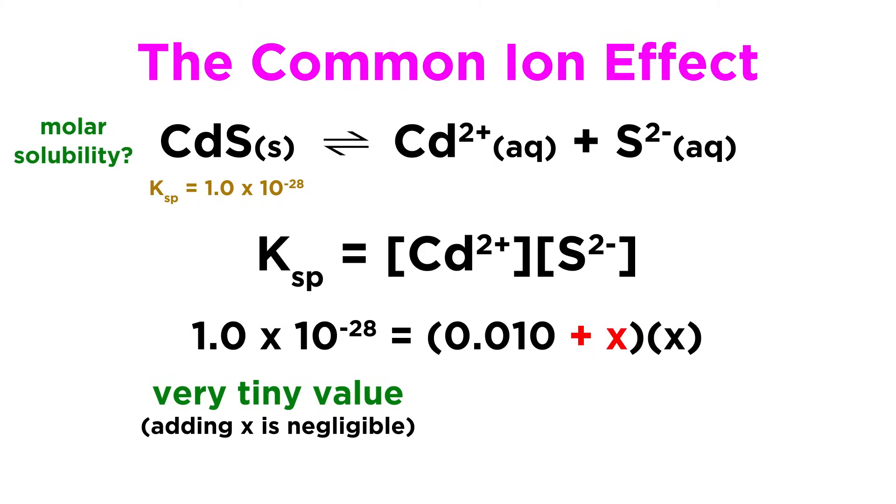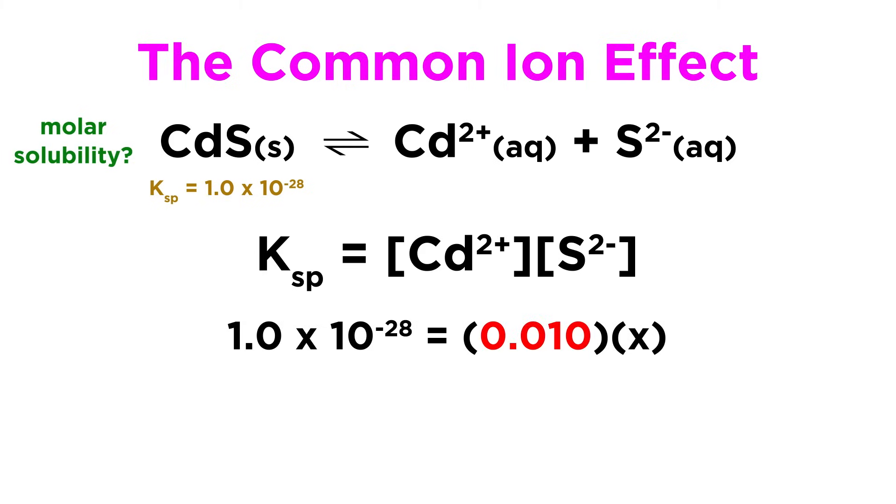In other words, the equilibrium concentration of cadmium will certainly round down to 0.01, so let's just call it 0.01, which simplifies the expression considerably.